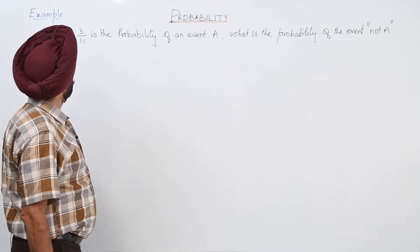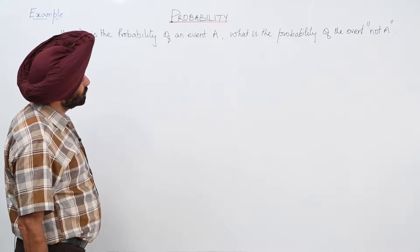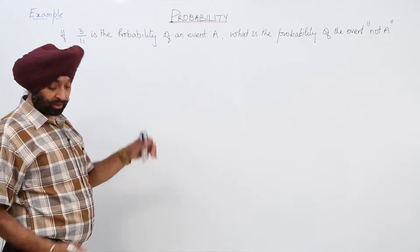Next example. If 3 upon 11 is the probability of an event A, what is the probability of the event not A?